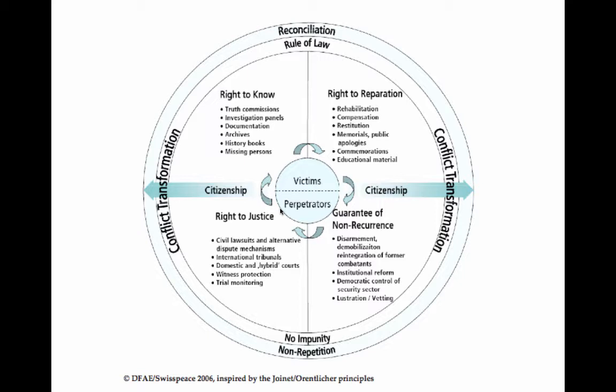The four quadrants represent different approaches to post-conflict reconstruction: the right to know, the right to reparation, the right to justice, and the guarantee of non-recurrence. At the center are victims and perpetrators as the central groups that post-conflict societies focus on in their attempts to heal and recover. Two arrows point toward conflict transformation and reconciliation as the final overarching goal of these approaches.